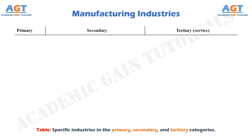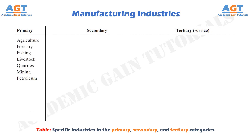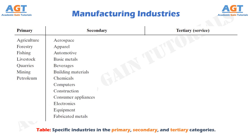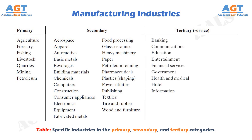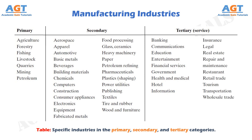Primary industries cultivate and exploit natural resources, such as agriculture and mining. Secondary industries take the outputs of the primary industries and convert them into consumer and capital goods. Manufacturing is the principal activity in this category, but construction and power utilities are also included. Tertiary industries constitute the service sector of the economy. A list of specific industries in these categories is presented in this table.